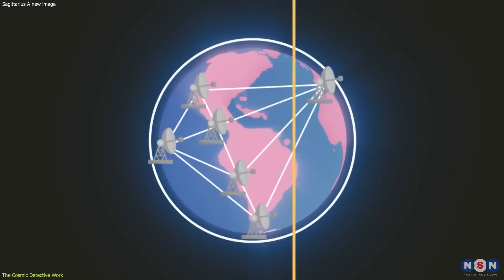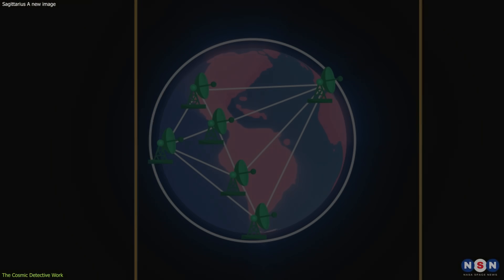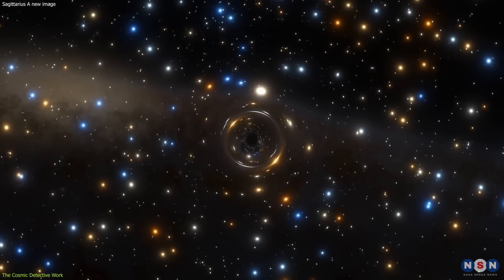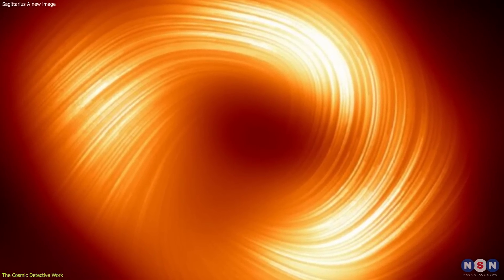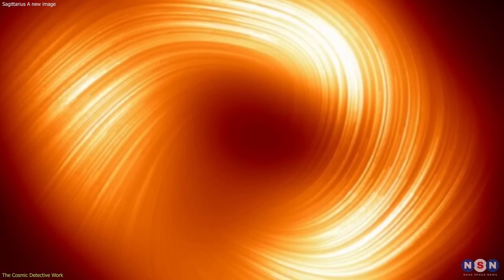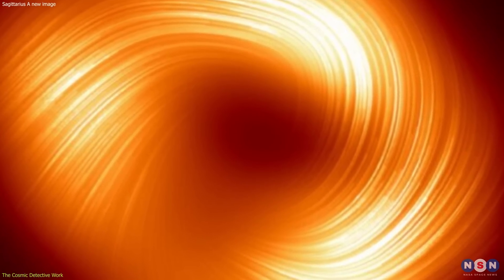Observing at a wavelength of 1.3 millimeters, the telescope captured the light bent by the intense gravity of the black hole, revealing its shadow against the backdrop of surrounding hot gas.